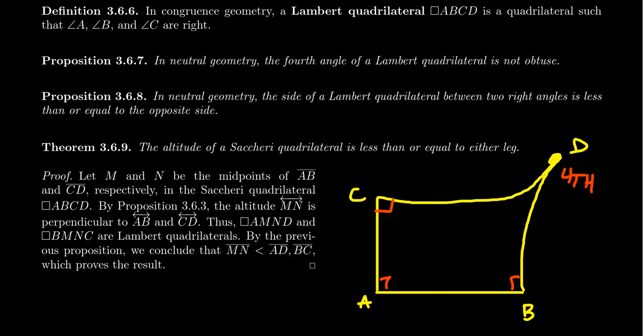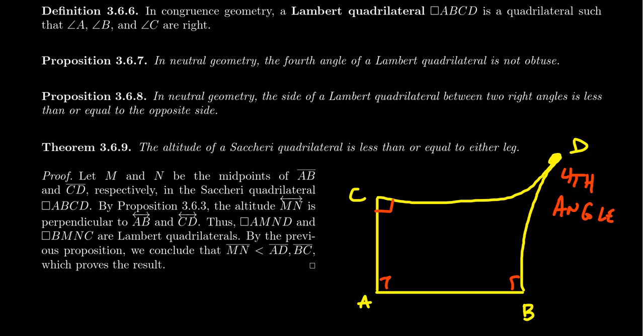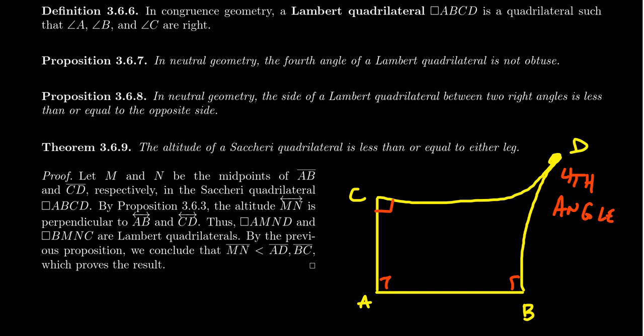Can you have a quadrilateral with three right angles where the fourth angle is not necessarily right? That's interesting. It doesn't seem possible, but that's only if you're thinking Euclidean. Lambert knew that the fourth angle of a Lambert quadrilateral was right if and only if you have the Euclidean parallel postulate.